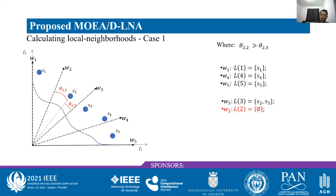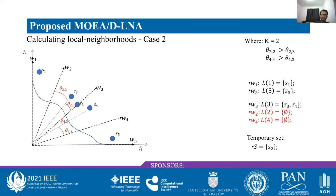For solution S2, the closest vector will be W3, as the angle between S2 and W3 is smaller than between S2 and W2. W3 is also the closest vector to solution S3. Hence, W3 will have two solutions in its local neighborhood, and W2 will have an empty local neighborhood. In MOEA/D-LNA, each local neighborhood has a limited size controlled by parameter K, intended to control the number of solutions in a particular region and help explore other promising regions. If the closest weight vector has already reached maximum capacity, the solution is stored in a temporary set denoted S.